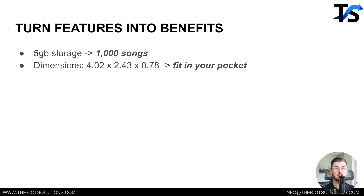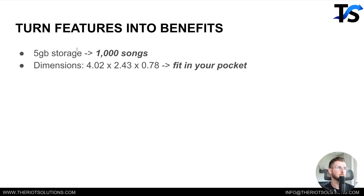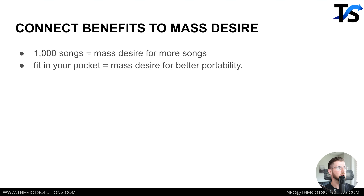Now you want to turn those features into benefits. Five gigabytes of storage — how does that benefit me as the consumer? If you look it up, five gigabytes divided by how many megabytes a song is comes out to a thousand songs. Dimensions means this thing is pretty small — small enough to fit in your pocket. That's a benefit to the consumer. Now we want to take those benefits and connect them to our mass desires. A thousand songs connects to the mass desire for more songs. Fits in your pocket connects to the mass desire for better portability. So we've connected a benefit to a desire.